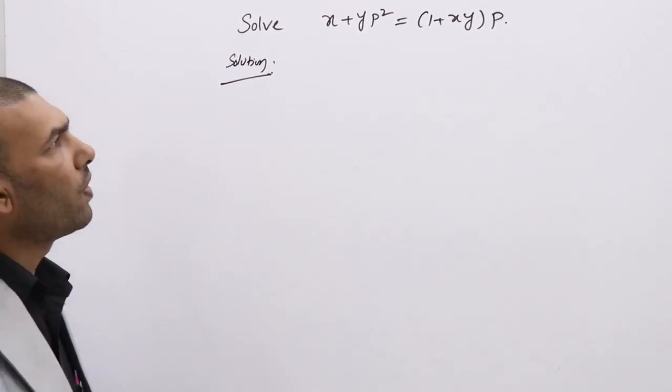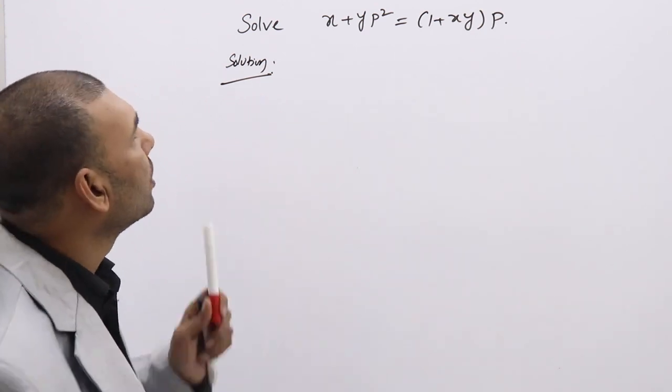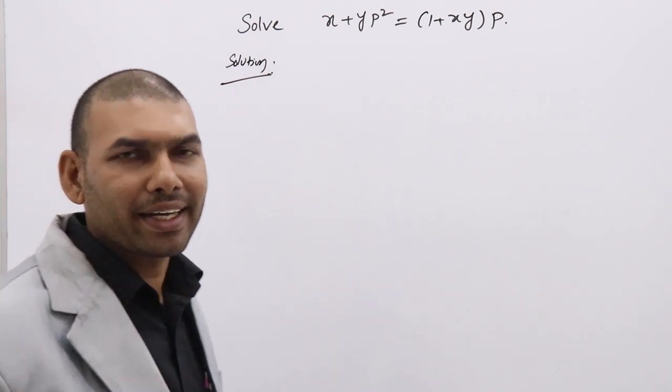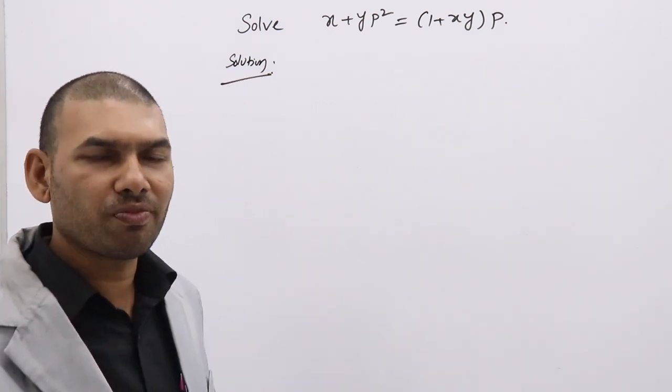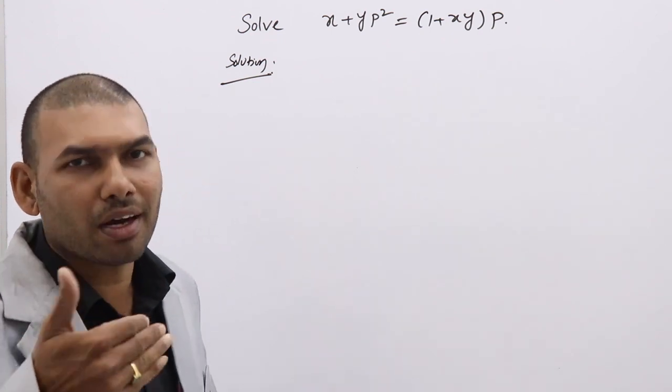Solve x plus yp squared equal to 1 plus xy into p. To solve this, first rearrange the equation so that you can get a clear idea whether it comes under first order but not first degree or solve for p or not.